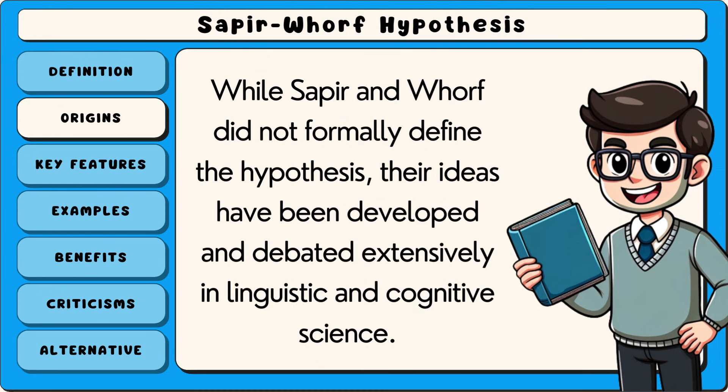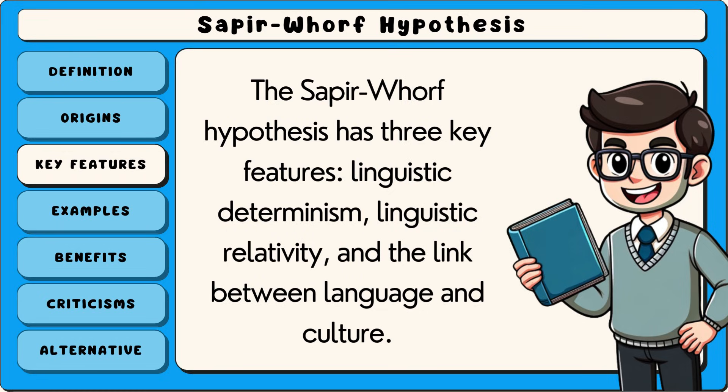While Sapir and Whorf did not formally define the hypothesis, their ideas have been developed and debated extensively in linguistic and cognitive science. The Sapir-Whorf hypothesis has three key features: linguistic determinism, linguistic relativity, and the link between language and culture.